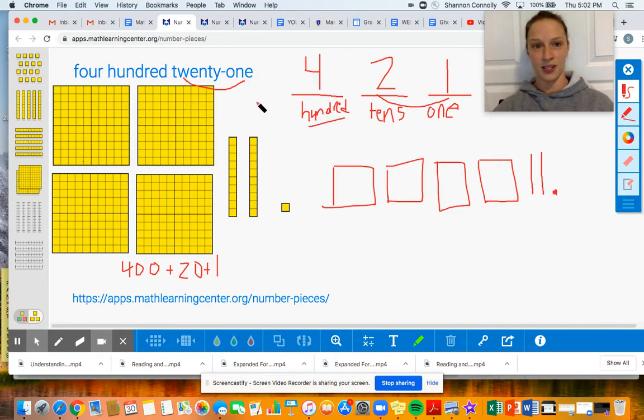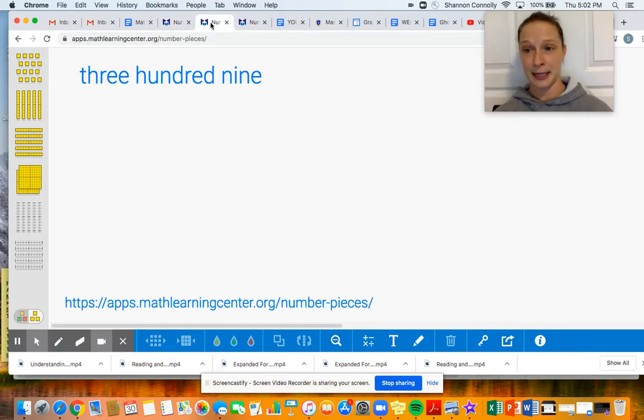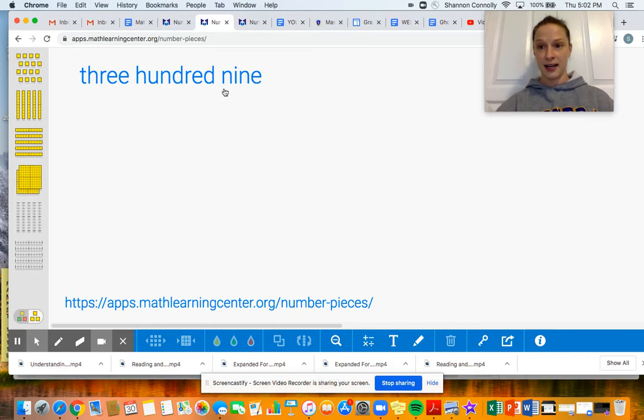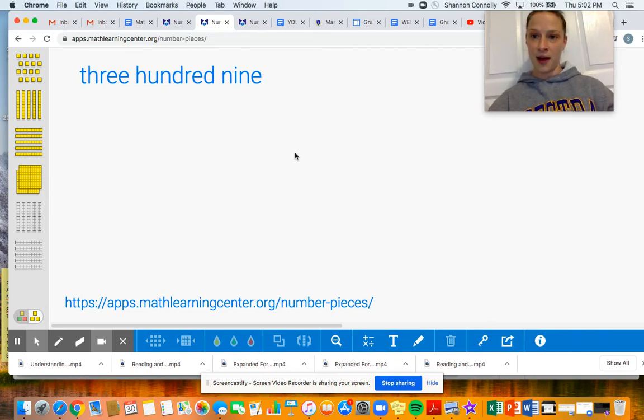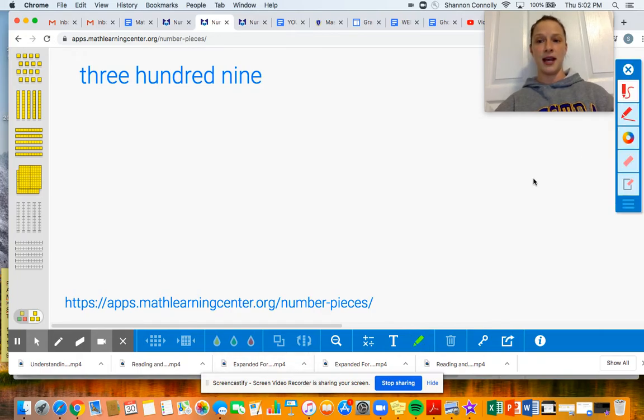All right, so let's move on to one more example. Well, we have two more examples to tackle here. If we get excited, I might do another one. So let's read this number. It says 309. And this time, I'm going to think about maybe making the representation first. Whatever is most comfortable to you, you do first, whatever one makes most sense to you.